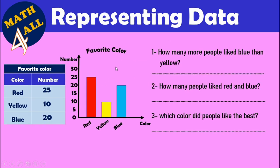How many more people like blue than yellow? 'How many more' means you find the difference by subtracting. Blue is 20 and yellow is 10. Write the bigger number first: 20 minus 10 equals 10.